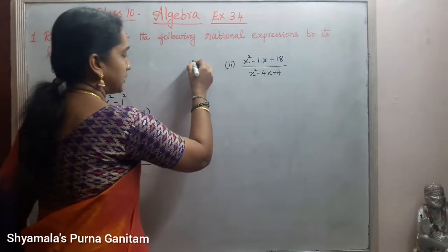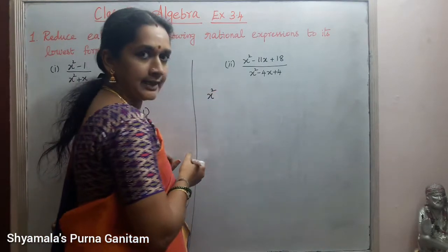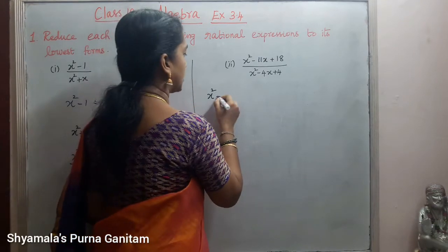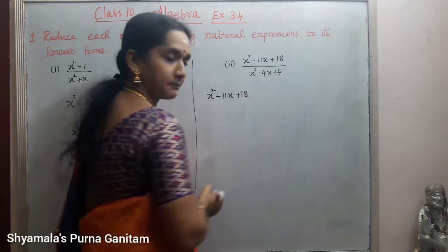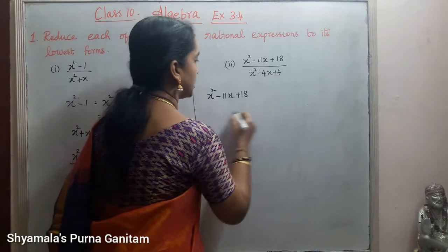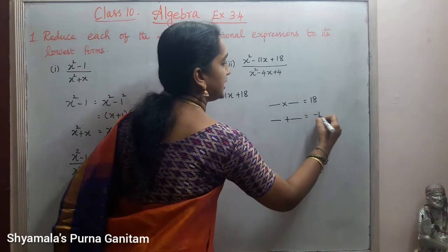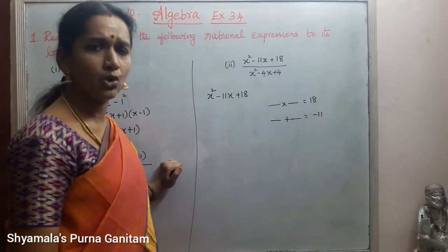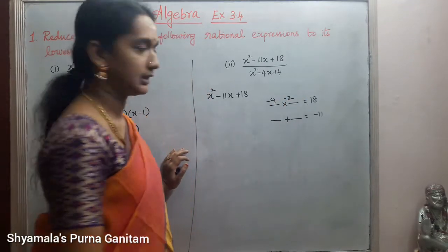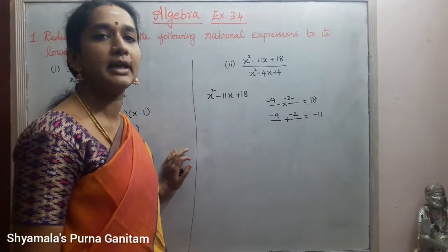Now the second sum. We will take the numerator: x squared minus 11x plus 18. Since it is a quadratic, we will use splitting the middle terms. When we multiply we have to get plus 18, and when we add we have to get minus 11. So we take minus 9 and minus 2: minus 9 times minus 2 is plus 18, and minus 9 plus minus 2 is minus 11.